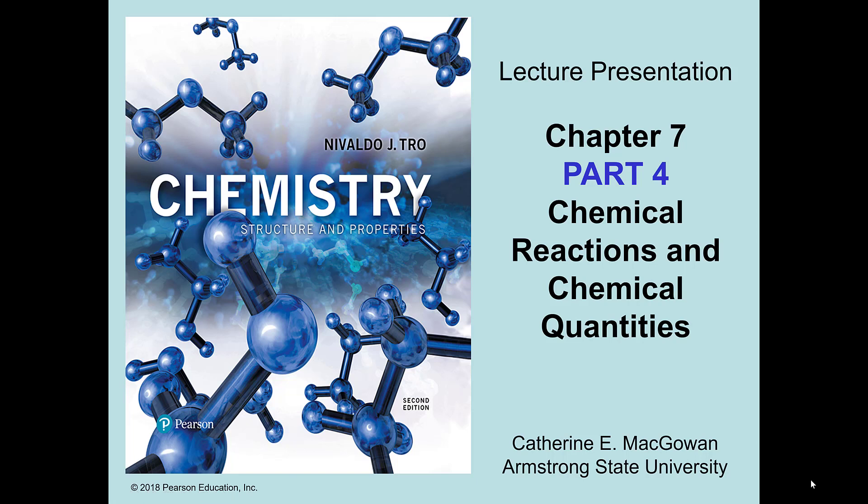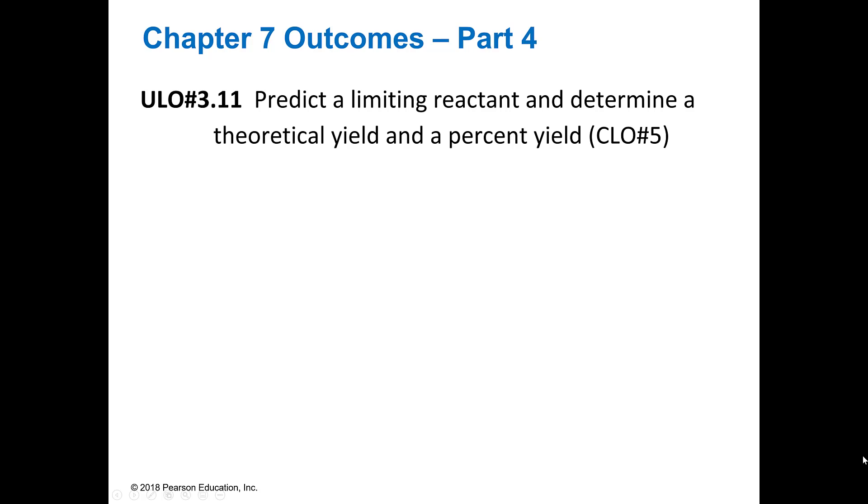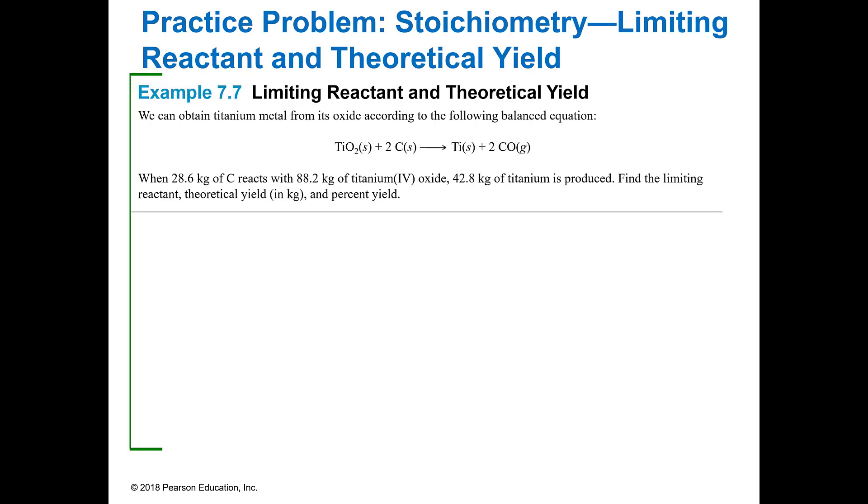Welcome back to the final part of Chapter 7. In Part 4, we're going to take our knowledge of balancing equations, of limiting reactants, of calculating theoretical yield, and then we're going to actually compare that to data that we might have gotten in the lab and be able to predict the actual percent yield based on the actual and the theoretical. So basically, it's just a little extension of what we were doing in the previous one.